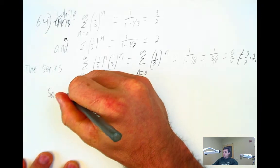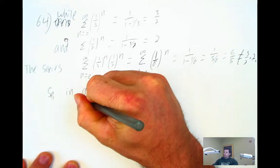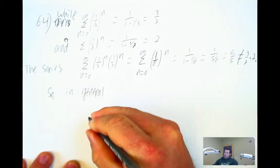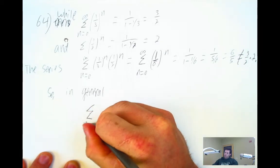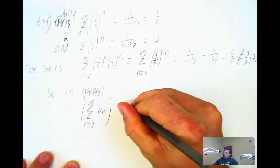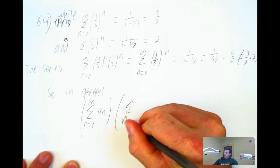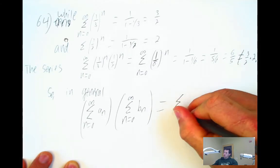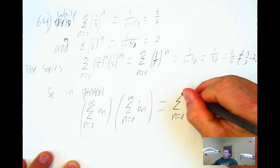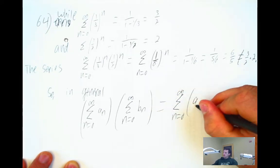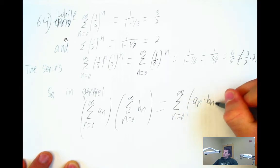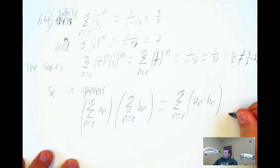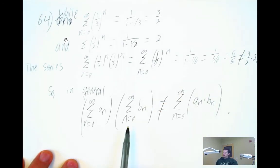In general, we do not have that the sum from zero to infinity of a_n times the sum from zero to infinity of b_n is the sum of a_n times b_n. So what we want to say is that the product of the sums is in general not the sum of the products.